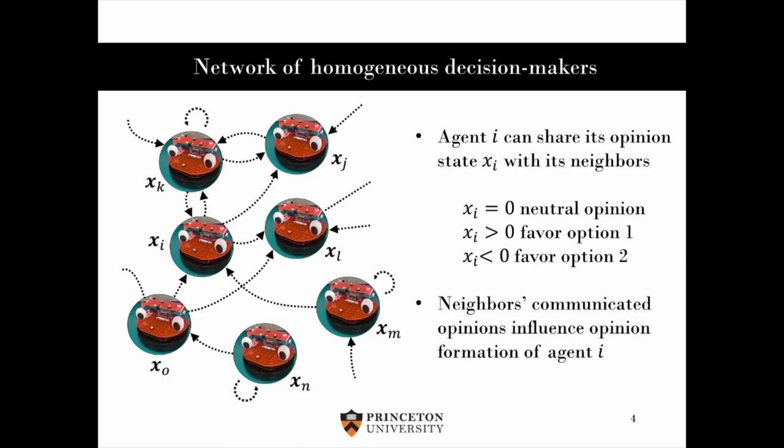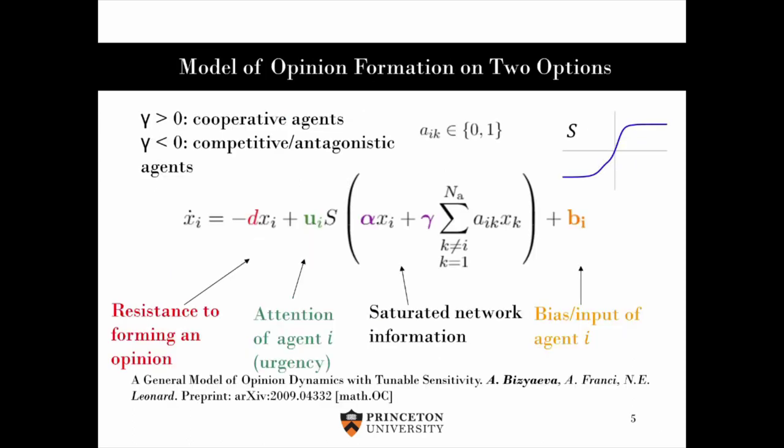In this framework, each agent i has a real valued opinion state, x_i, which is 0 when the agent has no preference, positive when the agent favors option 1, and negative when it favors option 2. On this slide, we are looking at the opinion update rule each agent is following, the form of which is inspired by mathematical models of cognitive processing, underlying decision making, and other complex behaviors. There are three main components in the model. A linear damping term, which tells us that an agent is reluctant to form an opinion, and in the absence of information, the agent's equilibrium opinion becomes neutral. Then on the right, we have the bias, or input term, which dominates and informs opinion formation in the absence of social interactions.